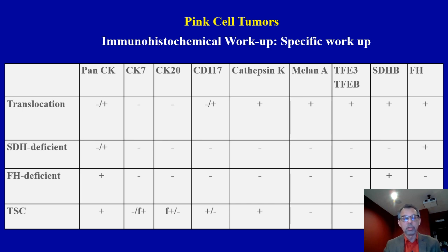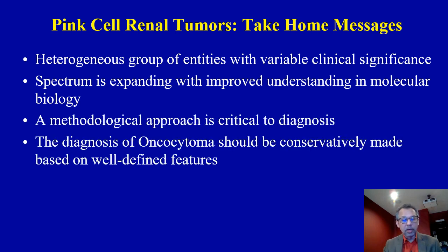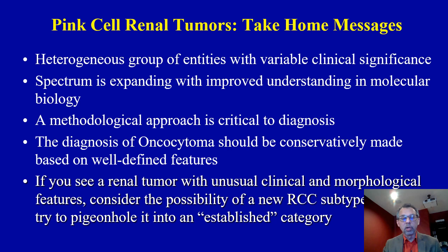In summary, pink cell or oncocytic renal tumors are a heterogeneous group of entities with variable clinical significance. The spectrum is expanding with improved understanding of molecular biology. A methodological approach is critical to diagnosis. The diagnosis of oncocytoma should be conservatively made based on well-defined features. If you see a renal tumor with unusual clinical and morphological features, consider the possibility of a new RCC subtype before pigeonholing it into an established category. Thank you for your attention — please subscribe, provide comments, and share with your colleagues.